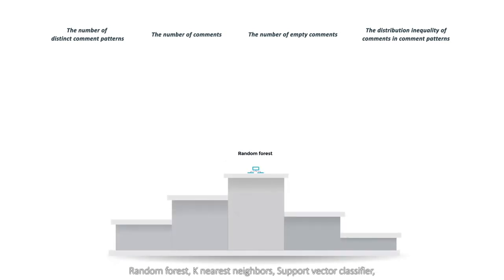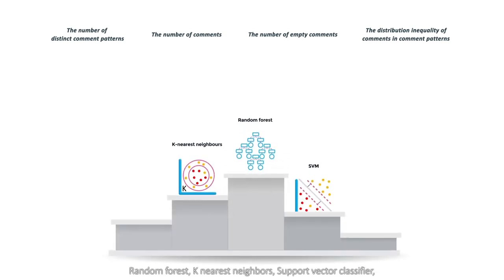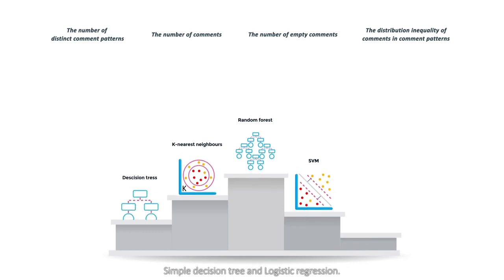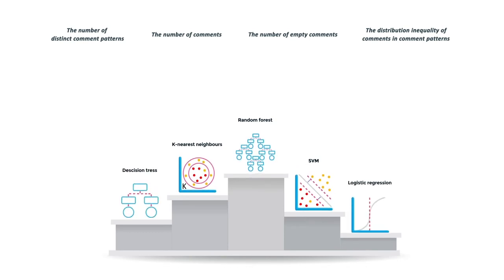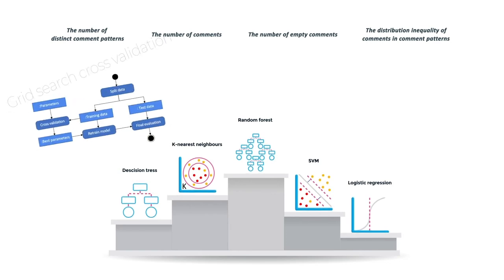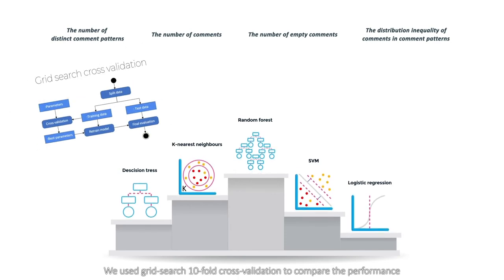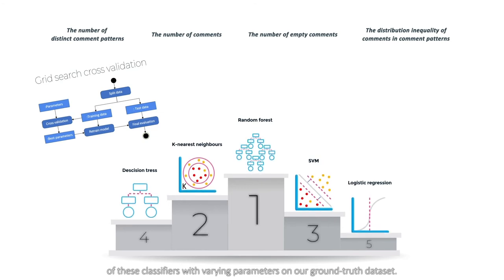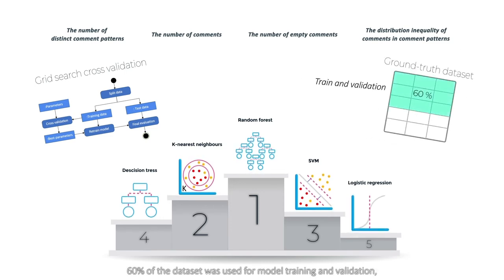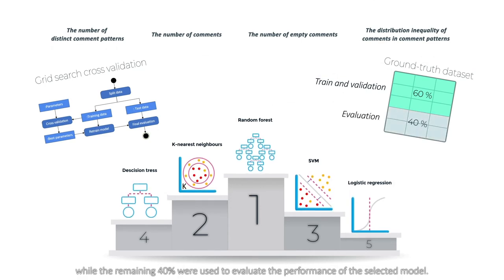Based on these four features, we created five types of classification models: random forest, k-nearest neighbors, support vector classifier, simple decision tree, and logistic regression. We used a 10-fold grid search cross-validation to compare the performance of these classifiers with varying parameters on our ground truth dataset. 60% of the dataset was used for model training and validation, while the remaining 40% was used to evaluate the performance of the selected model.